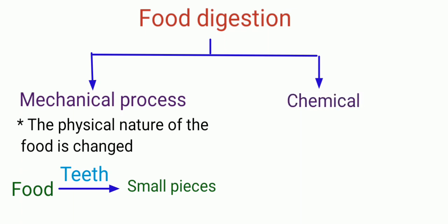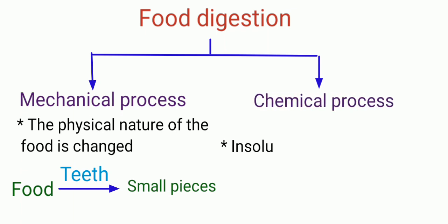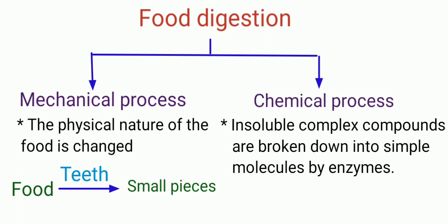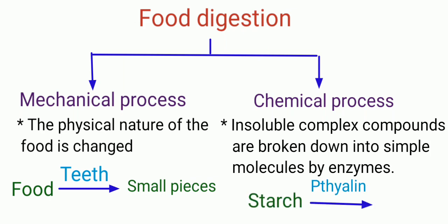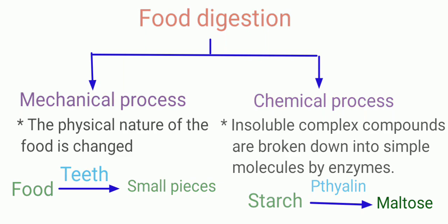During the chemical process, the insoluble complex compounds are broken down into simple molecules by enzymes. For example, starch is converted into maltose by the action of ptyalin, or salivary amylase enzyme.